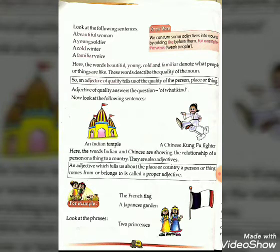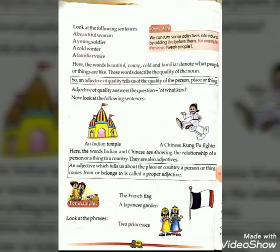These words denote what people or things are like — they describe the quality of the noun. So here we have the adjective of quality. An adjective of quality tells us of the quality of a person, place, or things.